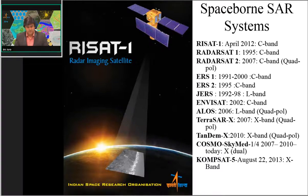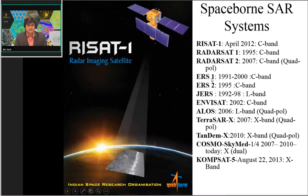The third category is spaceborne SAR systems. The list includes RISAT-1 (launched April 2012, C-band), RADARSAT-1 and RADARSAT-2 (C-band), and the European Space Agency series including ERS-1, ERS-2, ENVISAT, and Sentinel-1A and 1B — twin satellites providing C-band data. JERS and ALOS (JAXA) provide L-band data. TerraSAR-X (launched 2007) and TanDEM-X (launched 2010) are twin satellites capable of providing quad-pol data in X-band.